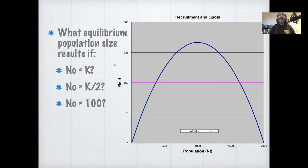We've added this yield curve. So we have our growth curve in blue, we've added this yield curve in pink. And now we need to ask, what would the equilibrium population be if we started at the carrying capacity 2,000, if we started at half the carrying capacity 1,000, or if the population is currently fairly depressed at 100? Say it had been overfished, and now we're instituting a fixed quota system. So let's walk through that.